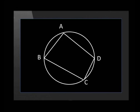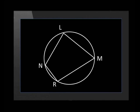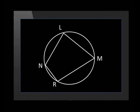Quadrilateral ABCD is cyclic because all four vertices or corners lie on the edge or circumference of the circle. Quadrilateral LMRN is also cyclic. Note that we name a quad by going around the quadrilateral in either clockwise or anticlockwise direction. This quad could also be named RMLN, but never MNLR.